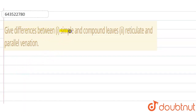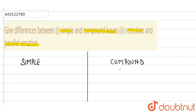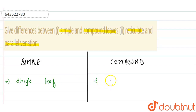Here a question is given: differences between simple and compound leaves, and second is reticulate and parallel venation. Let's start with simple and compound leaves. In case of simple leaf, there is only one single leaf — every petiole consists of only one single leaf. Whereas in case of compound leaves, a cluster of leaves is present, meaning more number of leaves are present.